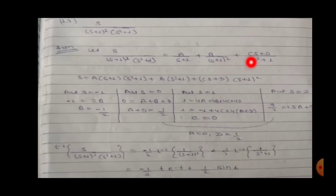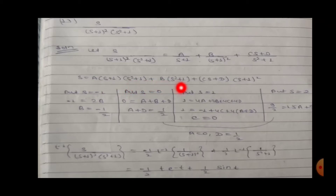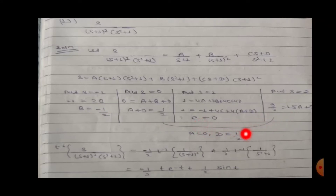Multiplying through and taking LCM, we get A(s+1)(s²+1) plus B(s²+1) plus (Cs+D). Putting in different values of s, we get B equal to minus half, C equal to zero, A equal to zero, and D equal to half.